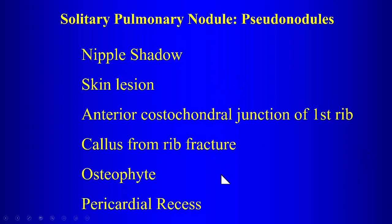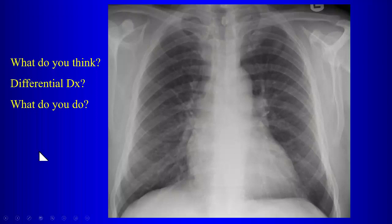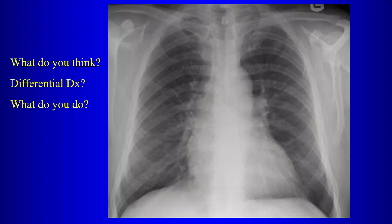Those are all examples of pseudonodules — things you don't want to mistake for lung nodules and get the patient involved in extensive workup unnecessarily. The definition of a solitary pulmonary nodule is less than three centimeters, surrounded by lung parenchyma all the way around. If it's greater than three centimeters, you call it a mass. The probability of malignancy becomes much higher once you pass that threshold — the closer you get to three centimeters, the more concern for malignancy.